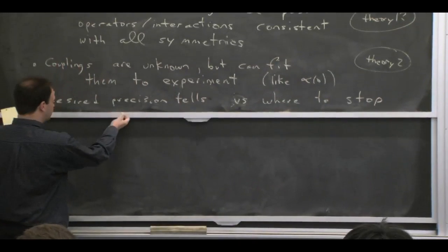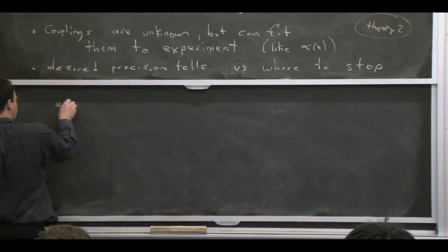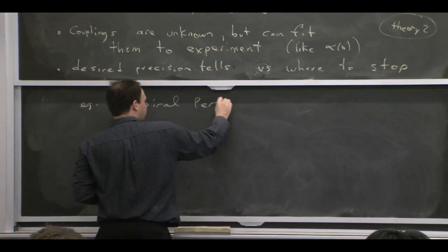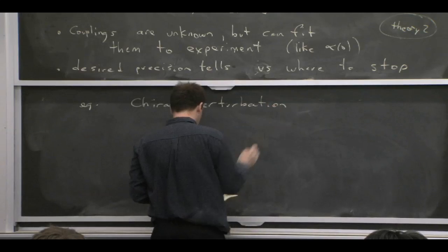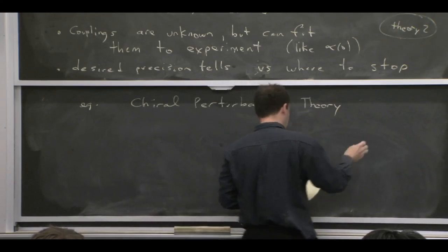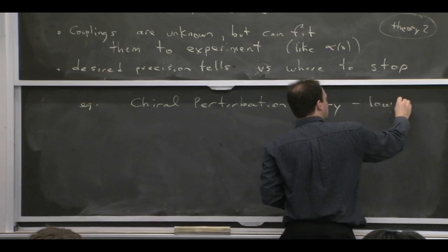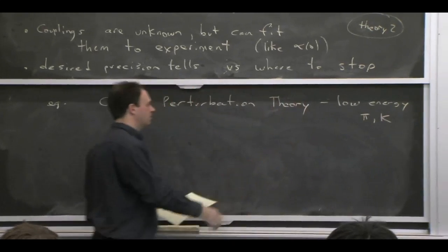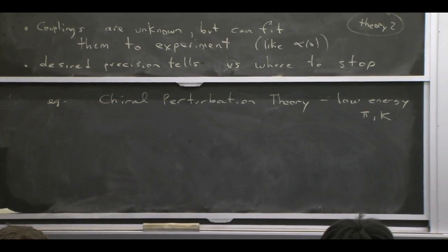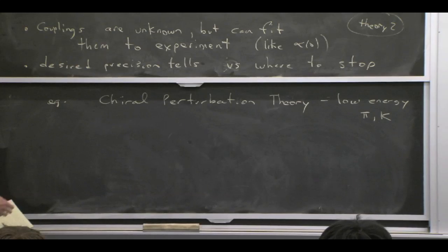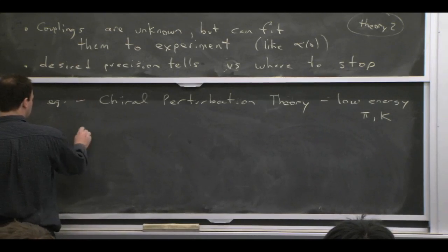The classic example of this bottom-up type is chiral perturbation theory, where you're thinking about a field theory for kaons and pions. Doing the matching from QCD onto kaons and pions is a non-perturbative process. So you construct the effective theory just from low energy and from symmetries — knowing the symmetry breaking pattern in particular — and construct chiral perturbation theory without thinking about doing the matching explicitly.